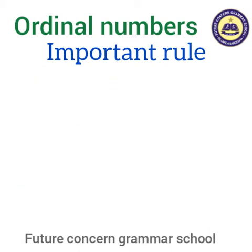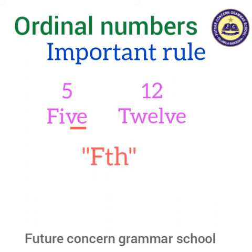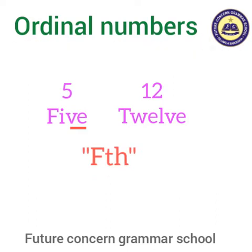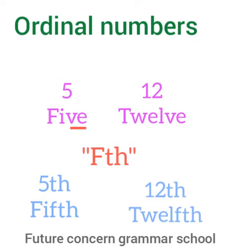Next rule is for 5 and 12. Jab hum 5 and 12 ko ordinal form mein change kertate hai, toh 've' ki jaga hum 'f' use kertate hai. For example, fifth and twelfth.